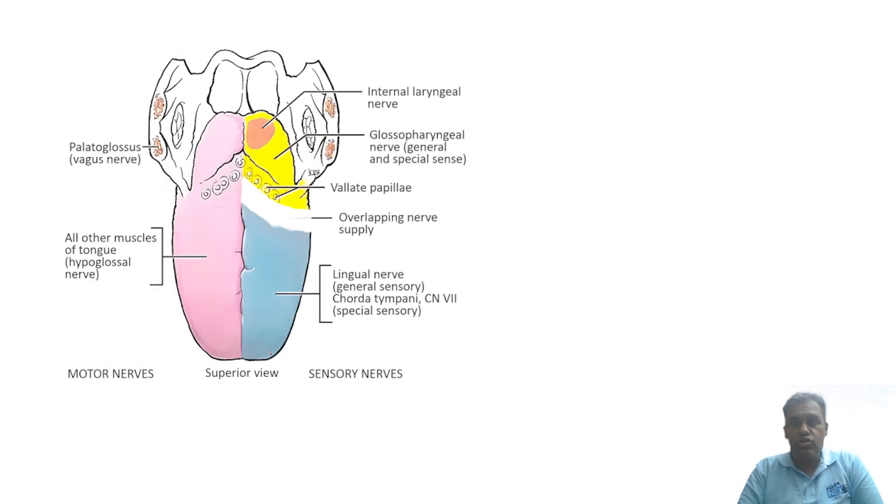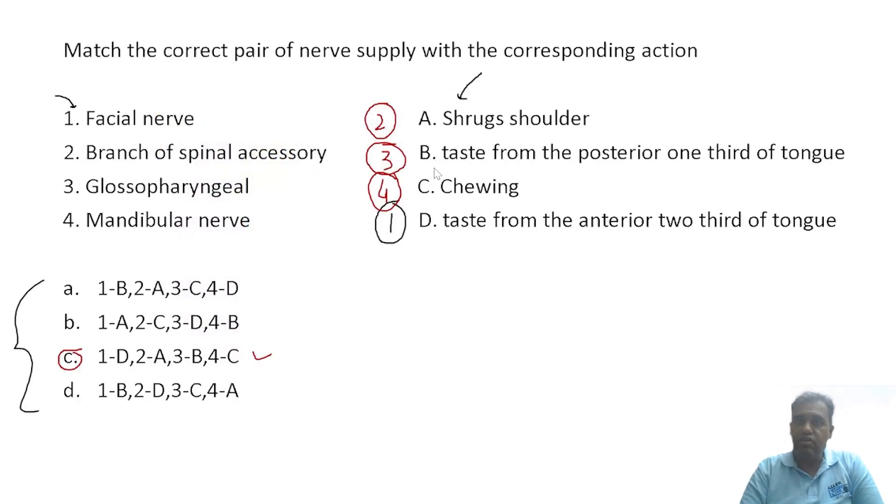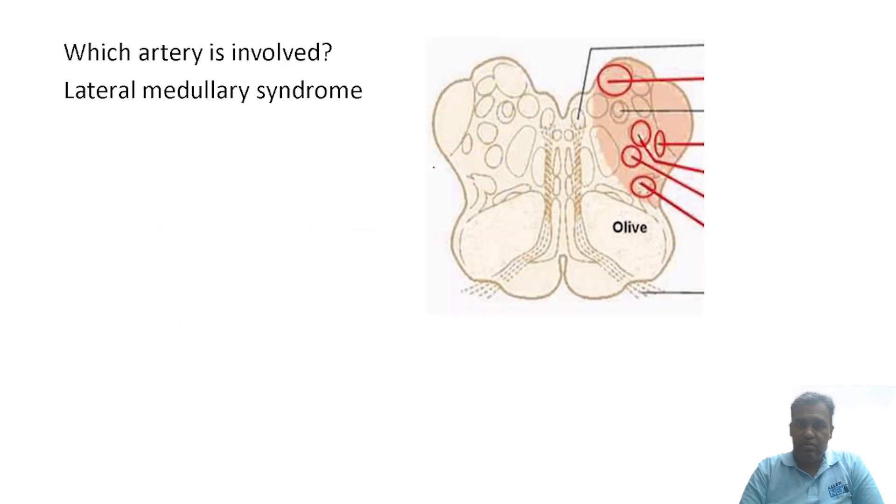Here is the figure of the tongue showing you the nerve supply. Basically, this is a motor nerve, but we are focusing only on the sensory nerve. See over here, special sensory, chorda tympani, 7th branch. Special means taste. And glossopharyngeal for the posterior third is special here for taste. This is how it will fit over here.